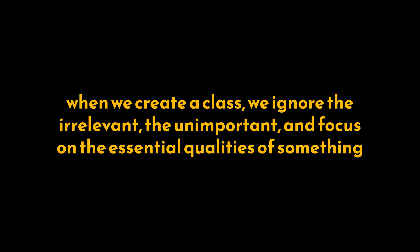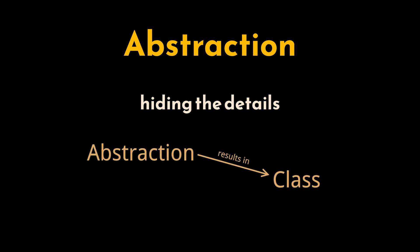When we create a class, we ignore the irrelevant, the unimportant, and focus on the essential qualities of something rather than sticking to one specific example that illustrates our idea or a piece of information. And that, in OOP, is referred to as abstraction. Abstraction is hiding the details and later on, after defining the abstraction or the definition, concreteness will be built upon it. The result of the abstraction is a blueprint, or a class to follow, while creating an object. In other words, we can say that an object is abstracted into a class.